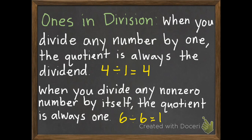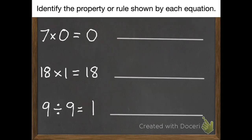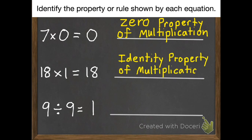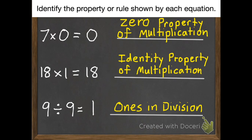Now that we know all of our division rules and multiplication properties, let's do some example problems. 7 times 0 equals 0 — that's the zero property of multiplication, which says anything times 0 equals 0. 18 times 1 equals 18 — it keeps its identity, so that's the identity property of multiplication. And 9 divided by 9 equals 1 — since it's division with a 1 involved, that's ones in division.